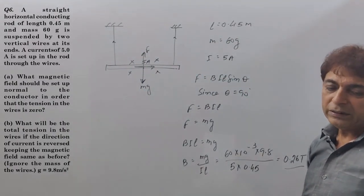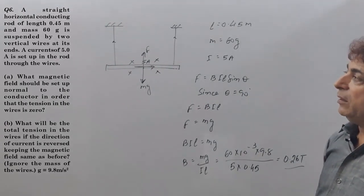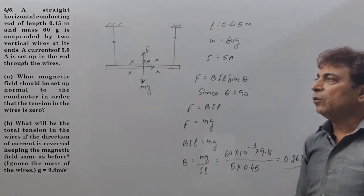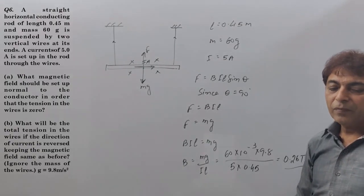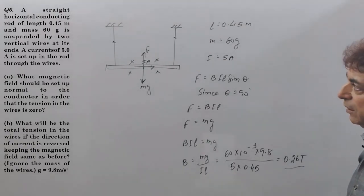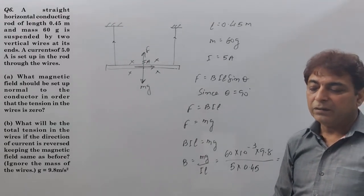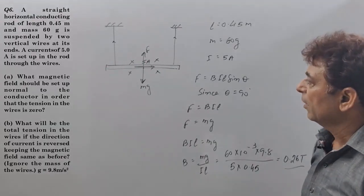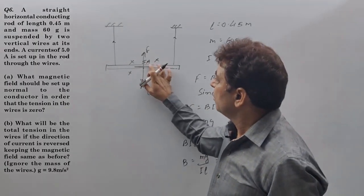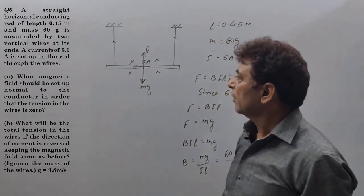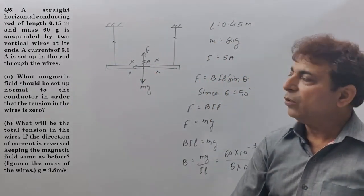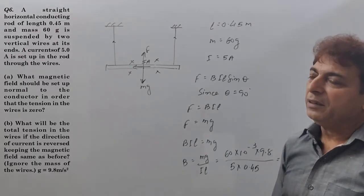Now the question is, what will be the total tension in the wires if the direction of current is reversed, keeping the magnetic field same as before. If we reverse the direction of current, what will be the total tension?